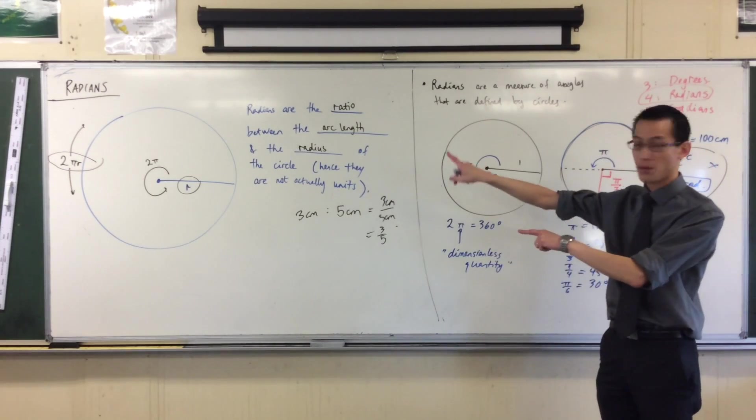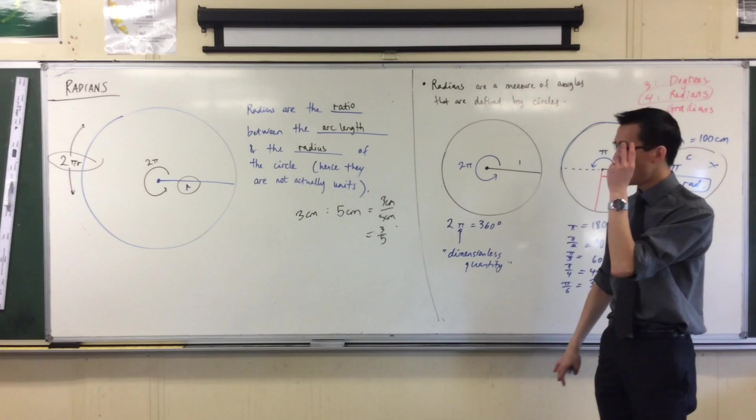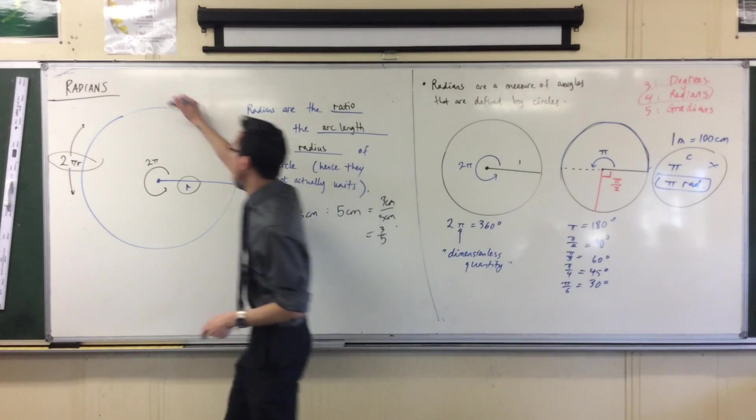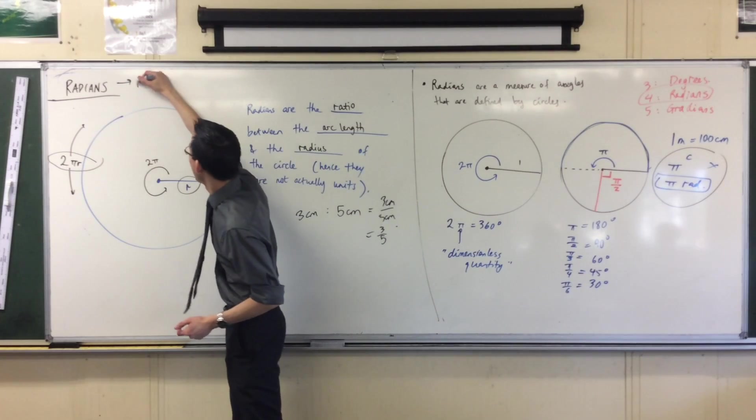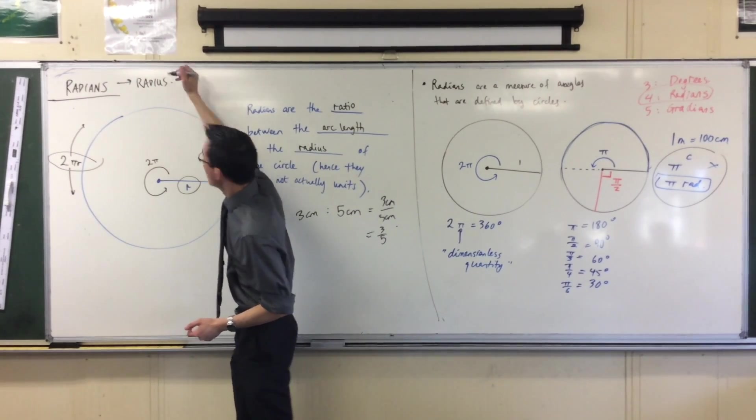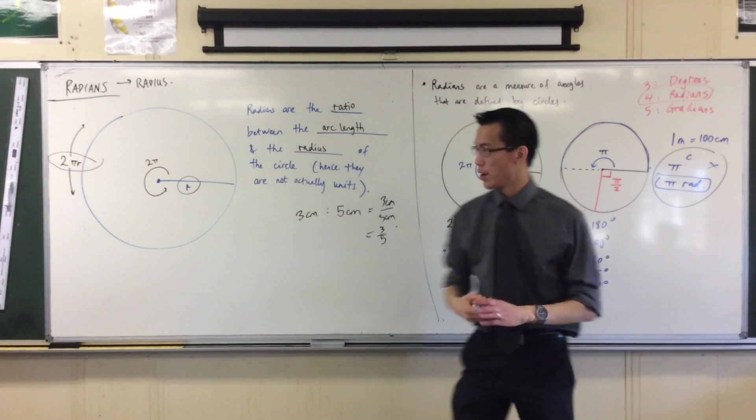Now, I've kind of been alluding to this, but hopefully I can show it to you on this diagram and make it really clear. Radians, it doesn't take a rocket scientist to see that this is connected to the word radius. Why is it connected to the word radius?